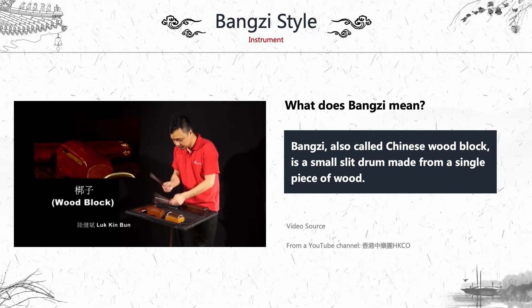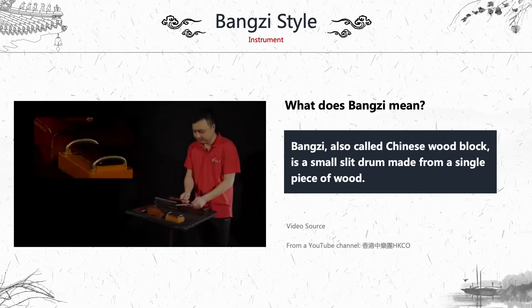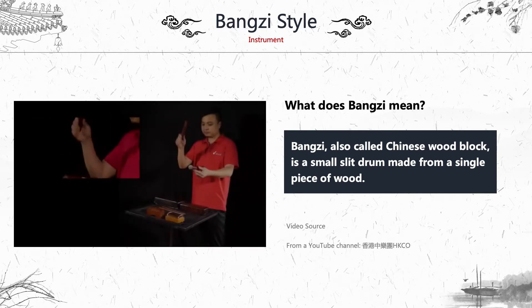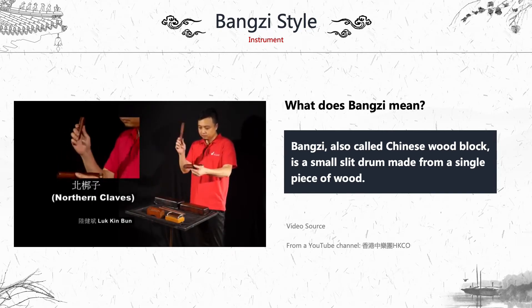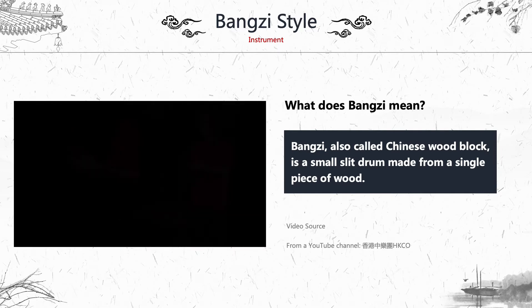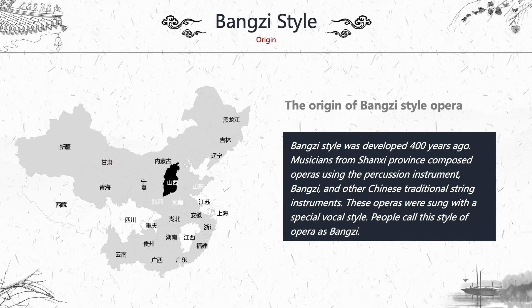In the video you can see different shapes of banzi, each with different sounds and different timbres. The origin of banzi style opera is quite interesting — it was developed around 400 years ago. Musicians from Shanxi province composed operas using the percussion instrument banzi along with other Chinese traditional string instruments, sung with a special vocal style. That is why this style of opera is called banzi, originally from Shanxi province in the middle of China.